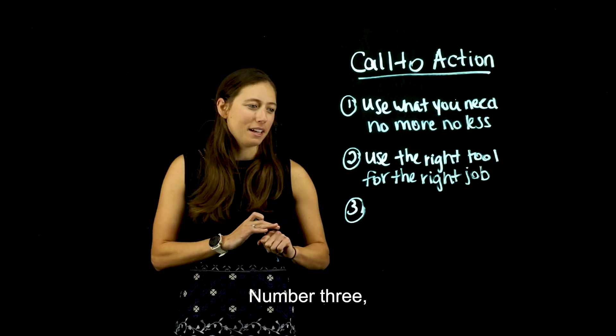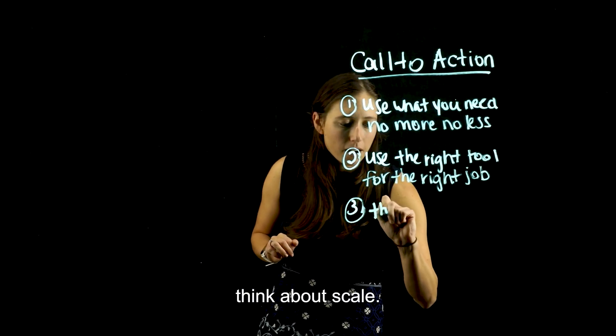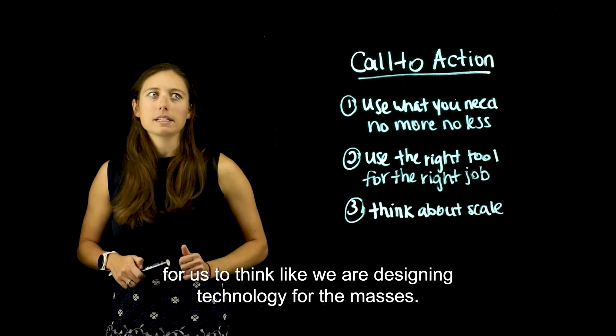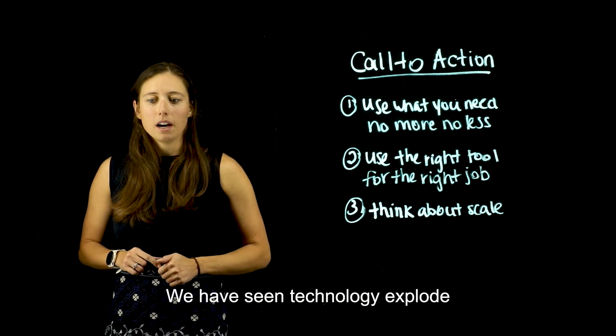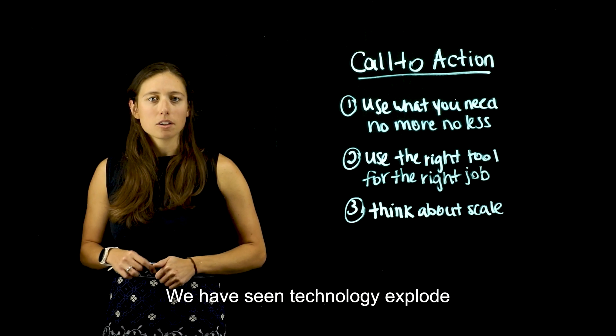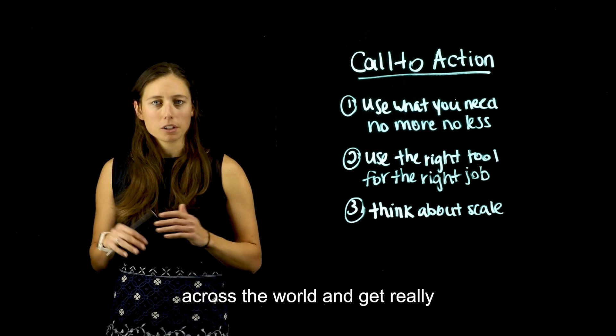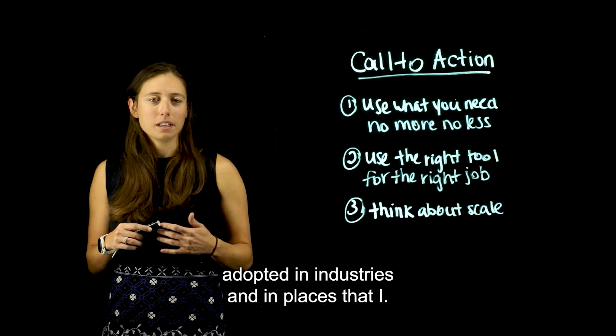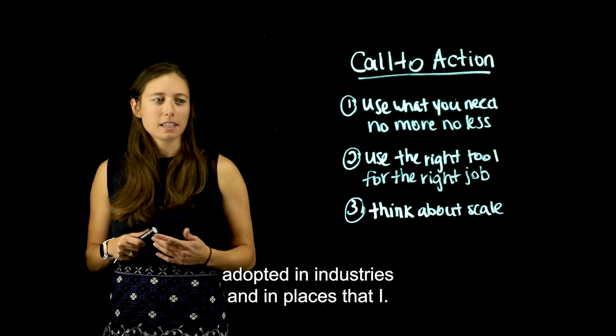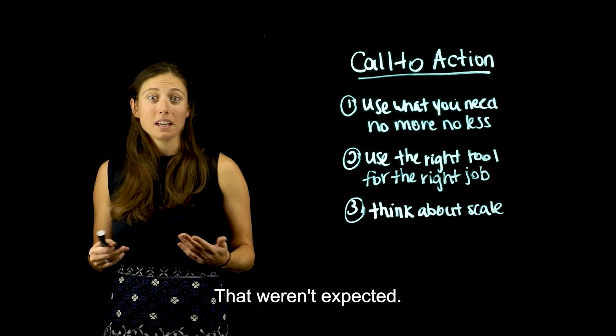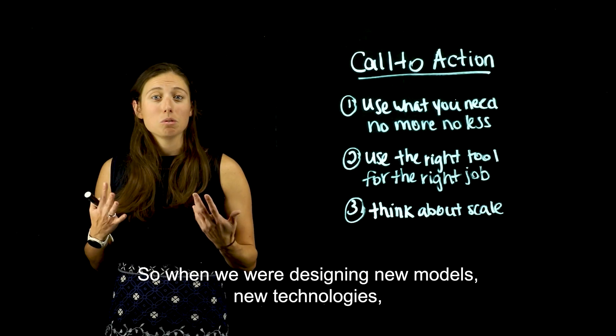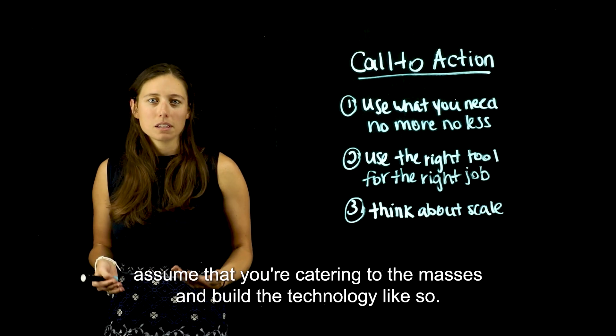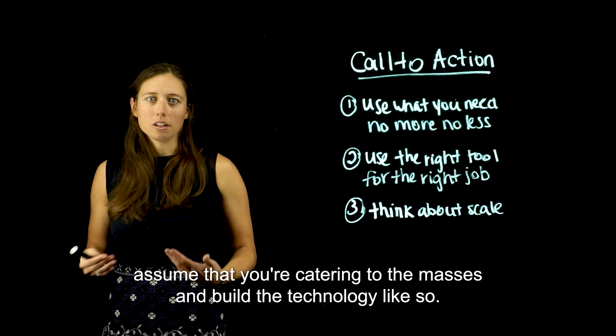Number three, think about scale. When we design technologies, it's important for us to think like we are designing technology for the masses. We have seen technology explode across the world and get really adopted in industries and in places that weren't expected. So when we're designing new models, new technologies, assume that you're catering to the masses and build the technology like so.